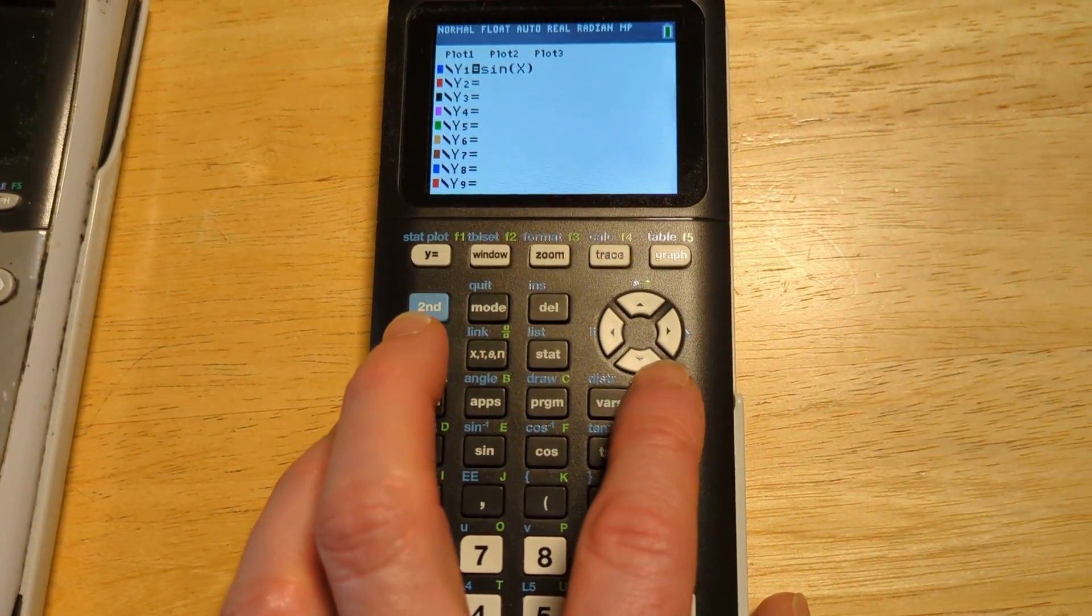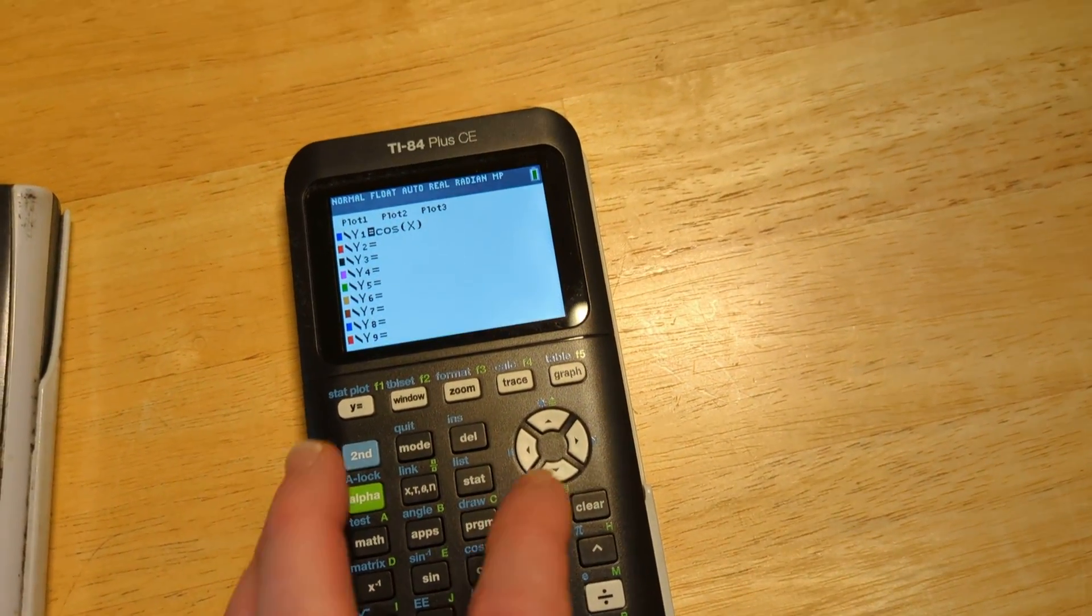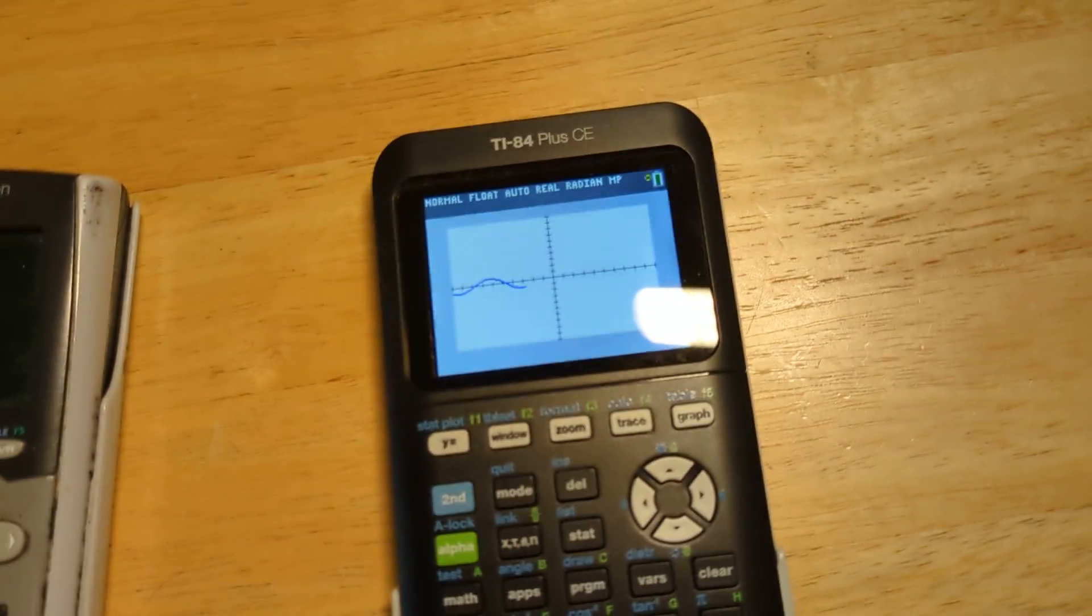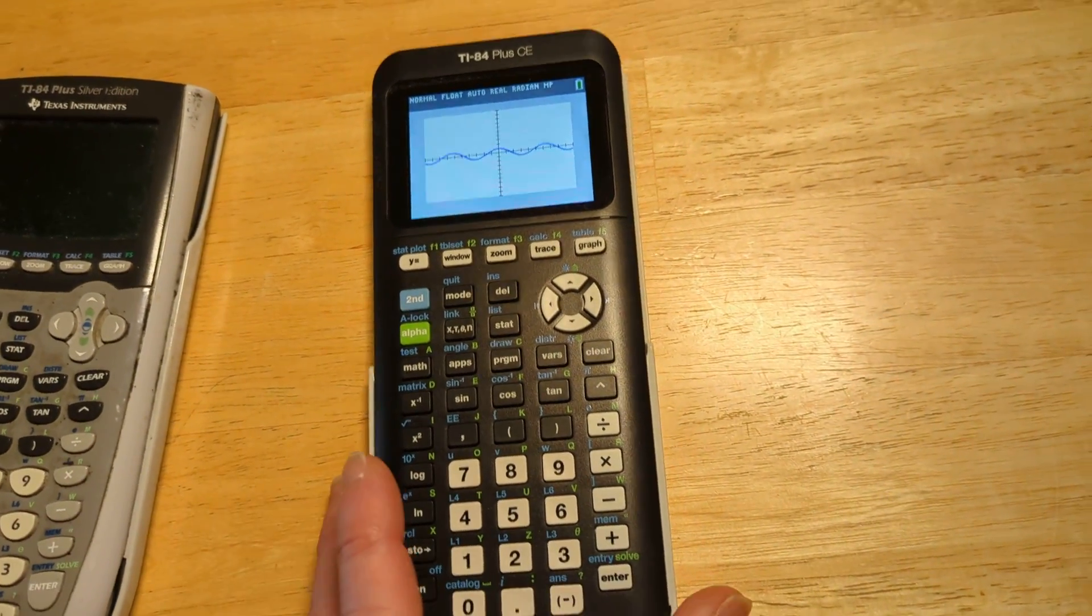Let's graph something else so you can actually see it trace out. Let's do cosine of X, and then I'll hit graph, and there you can see the graph of cosine. So it does graphing. It's a graphing calculator.